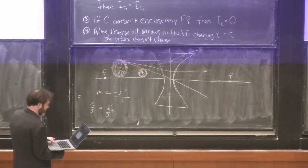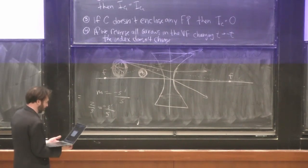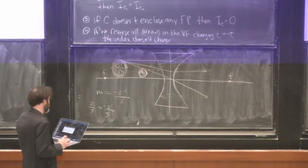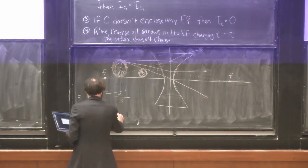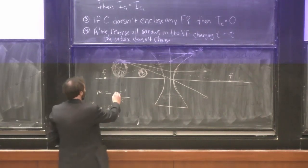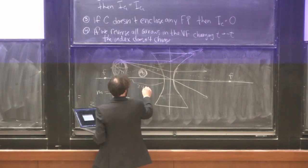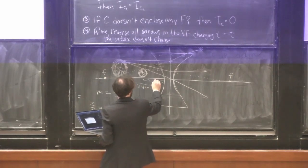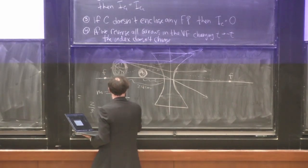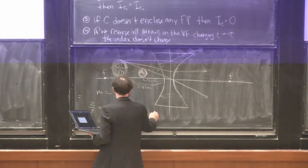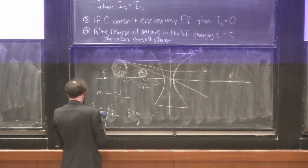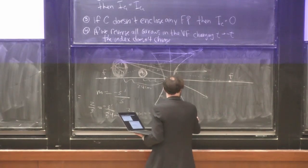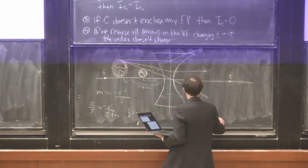The problem says she sees a virtual image of the coin. She holds the lens 24 centimeters above the coin on the table, so the object distance S is 24 centimeters. Two-thirds of 24 centimeters equals negative S prime, so that gives us S prime equals negative 16 centimeters.